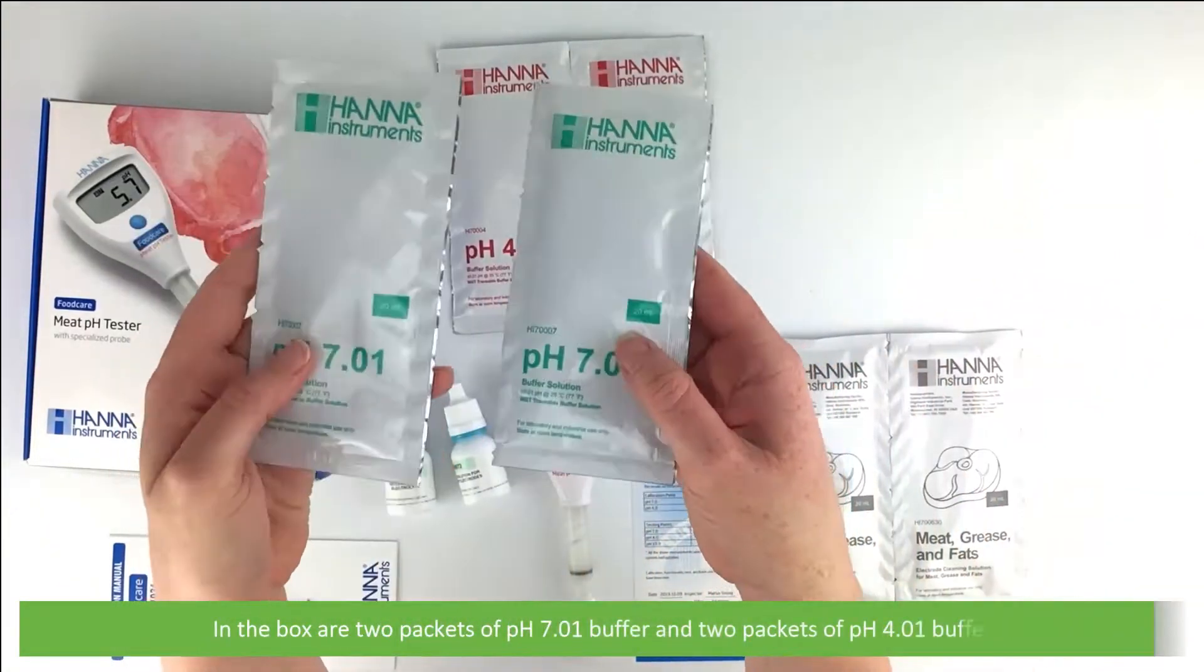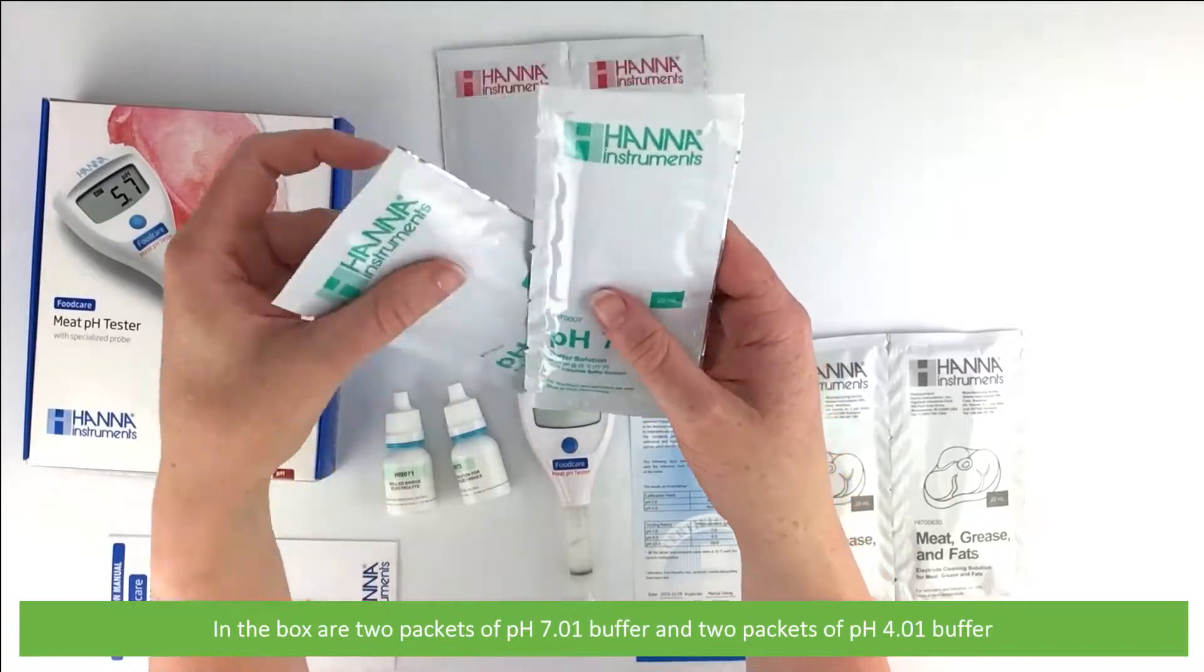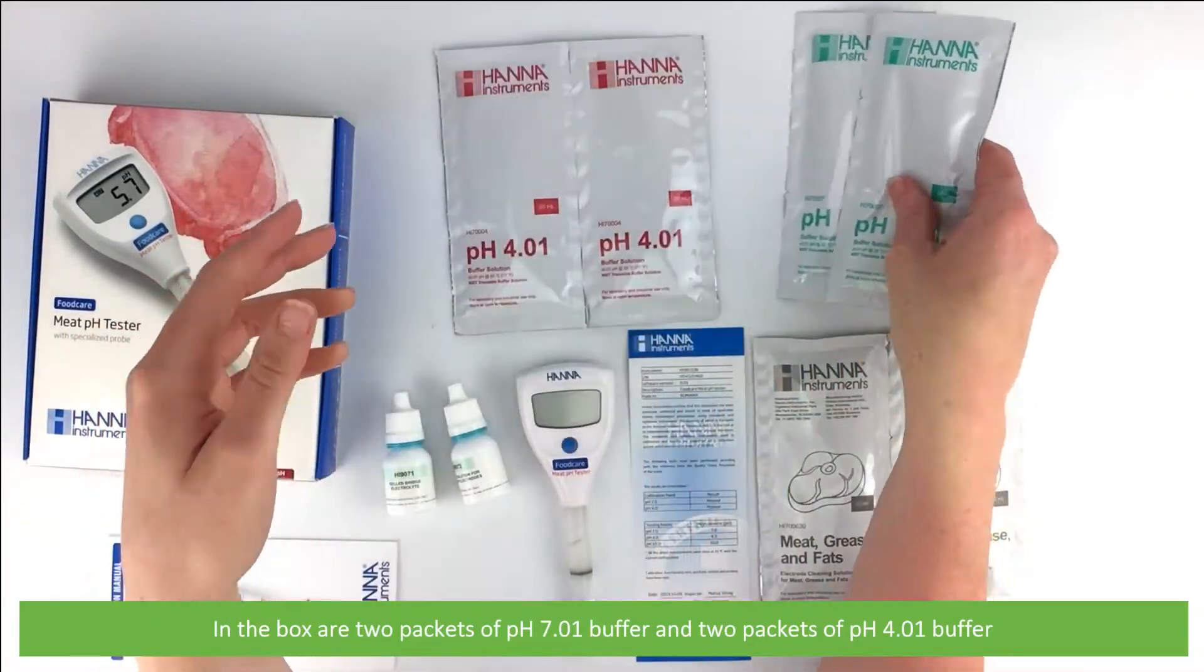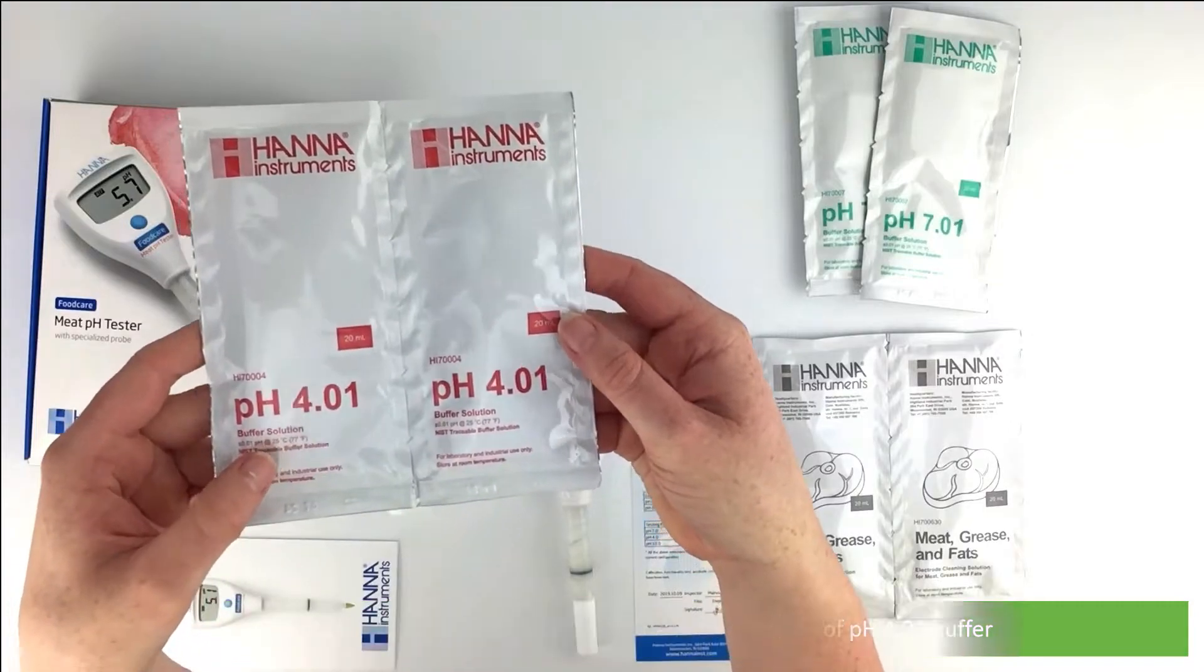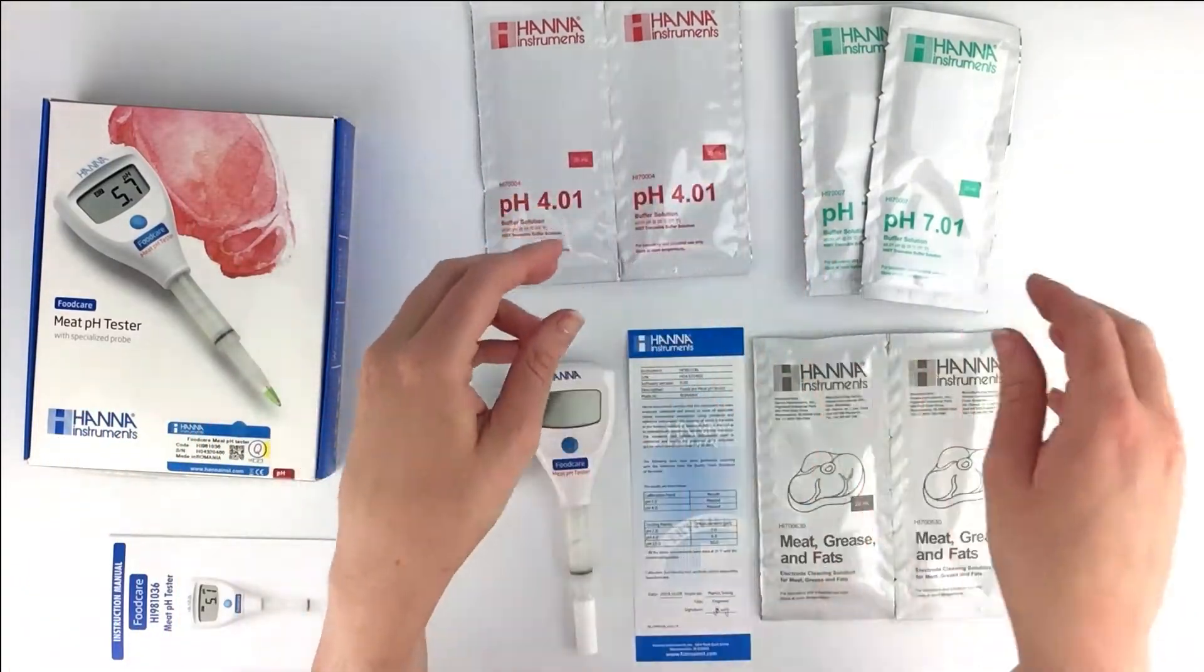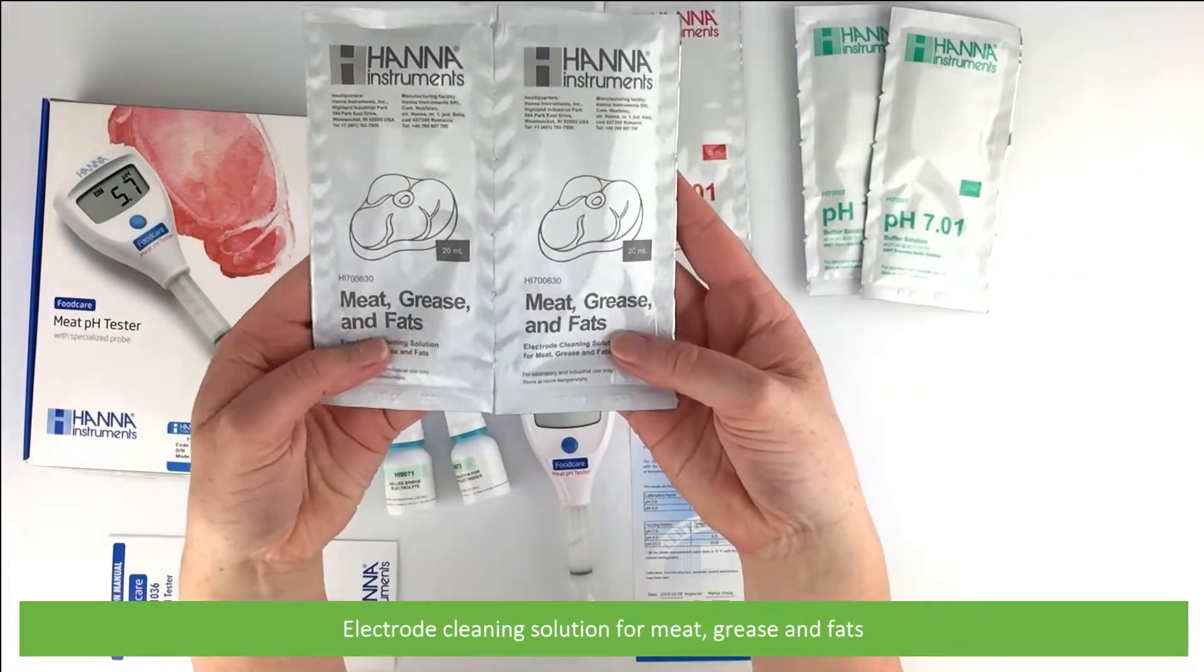In the box are two packets of pH 7.01 buffer and two packets of 4.01 buffer, electrode cleaning solution for meat, grease and fats.